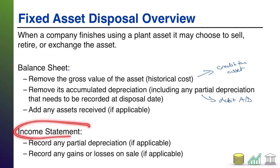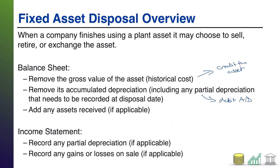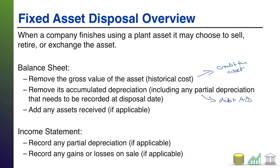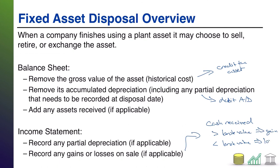Now that's the balance sheet. What about the income statement? In the event that you need to record some additional depreciation prior to sale, you're going to go ahead and record any of that partial depreciation — that's only if applicable; maybe you're selling right at year end where depreciation is already up to date. And most importantly, record any gains or losses on the sale. To the extent that the cash you receive is greater than the book value of the asset, you're going to have a gain. If it is less than the book value of the asset, then you are going to record a loss.